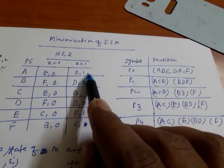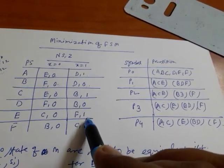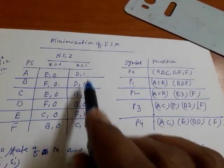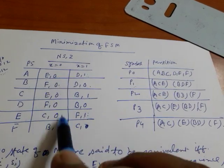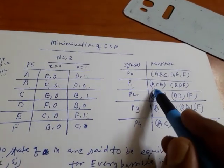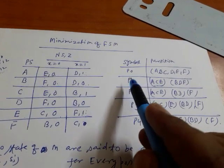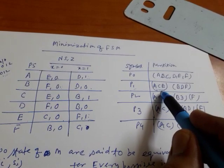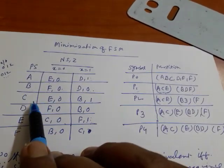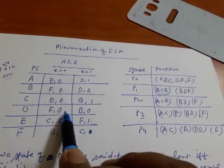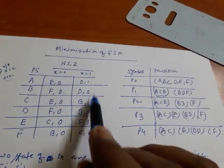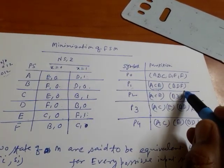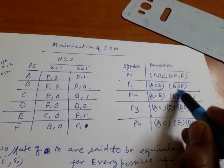For state a I am getting output 1, and I have to check where 1 occurs. I can say that a, c, and e belong to one category because for every possible input sequence they produce the same output sequence. Similarly for states b, d, f — for input 0 the output is 0, and for input 1 the output is 0 — so b, d, f belong to the same group. So P1 = {A,C,E} and {B,D,F}.